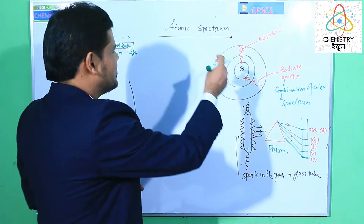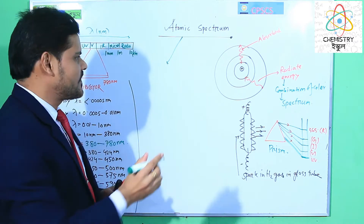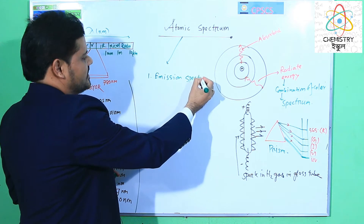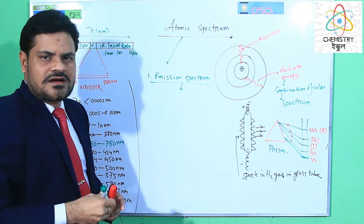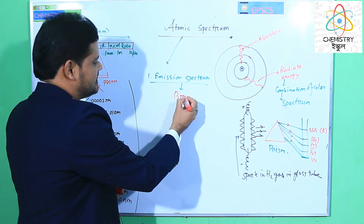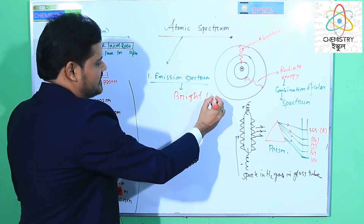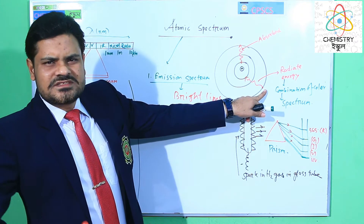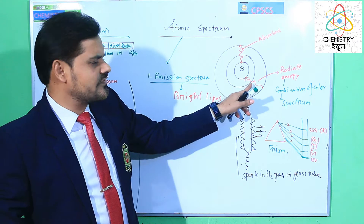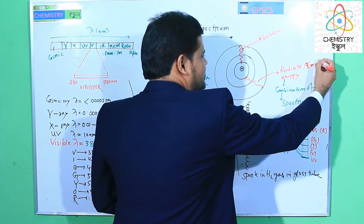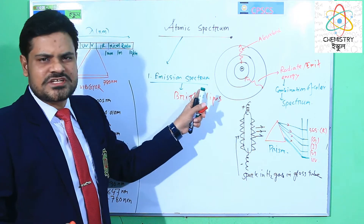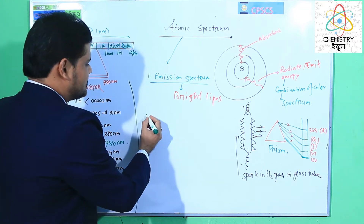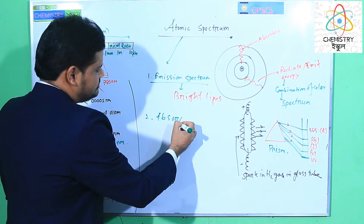According to the atomic spectrum, there are two types of spectrum. One is emission spectrum, or radiant spectrum. This spectrum is a combination of bright lines. When the electron jumps from a higher energy level to a lower energy level, the electron emits energy, and the emission spectrum will form with bright lines in the spectrum series.